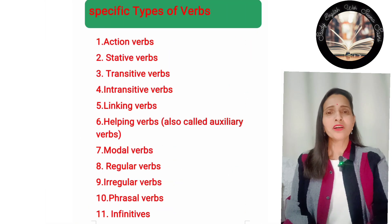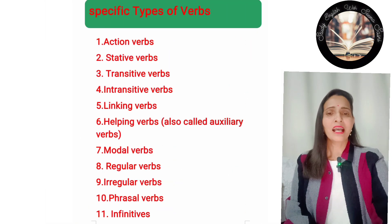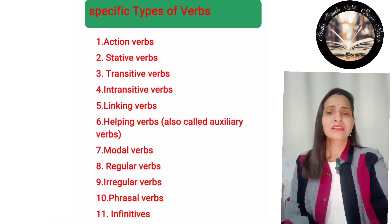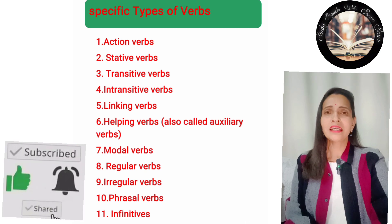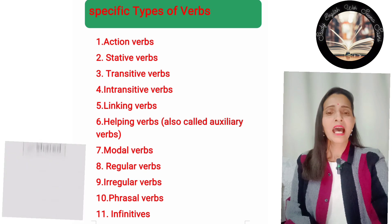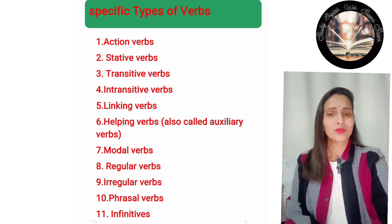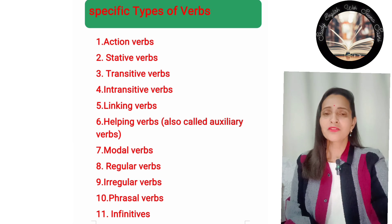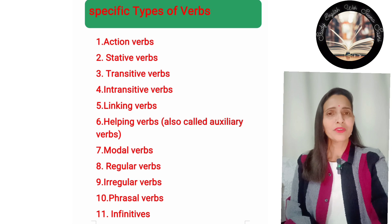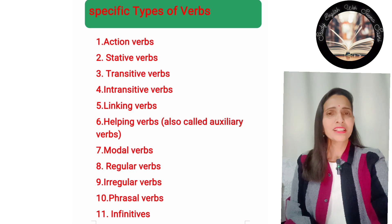Specific types of verbs are: action verbs, stative verbs, transitive verbs, intransitive verbs, linking verbs, and helping verbs. Helping verbs are also called auxiliary verbs. Then modal verbs, regular verbs, irregular verbs, phrasal verbs, and infinitives.